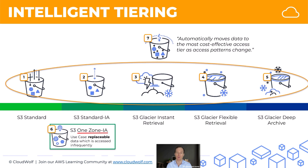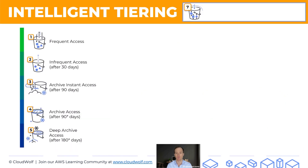Let's have a look in more detail. We'll put our classes from top to bottom on the left, and as you can see the names have changed. It's now frequent access tier, infrequent access tier, and archive instant access, instead of what it used to be — standard, glacier, and so on. This is mostly to avoid confusion, but the features are exactly the same.